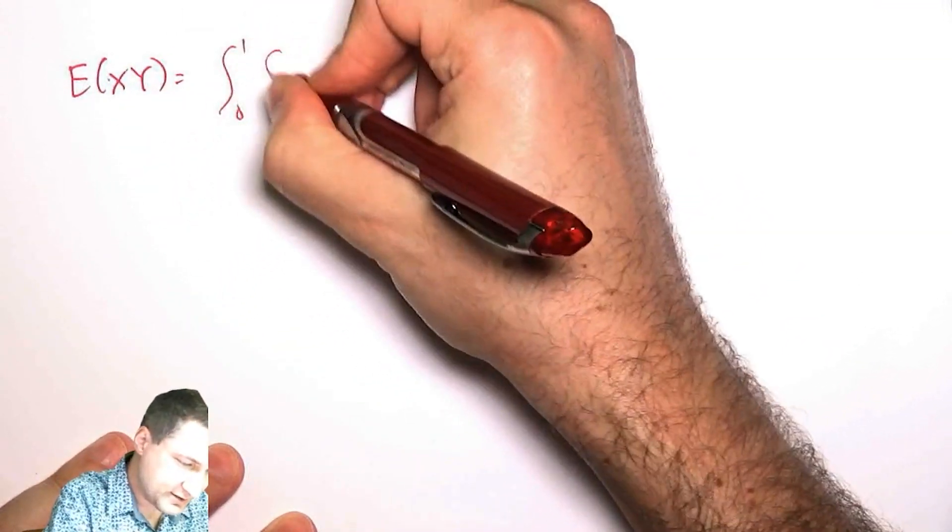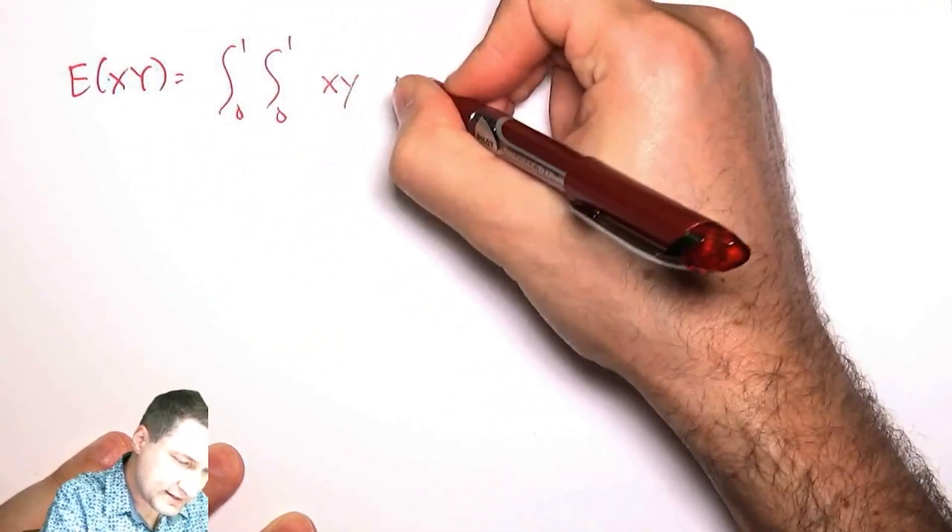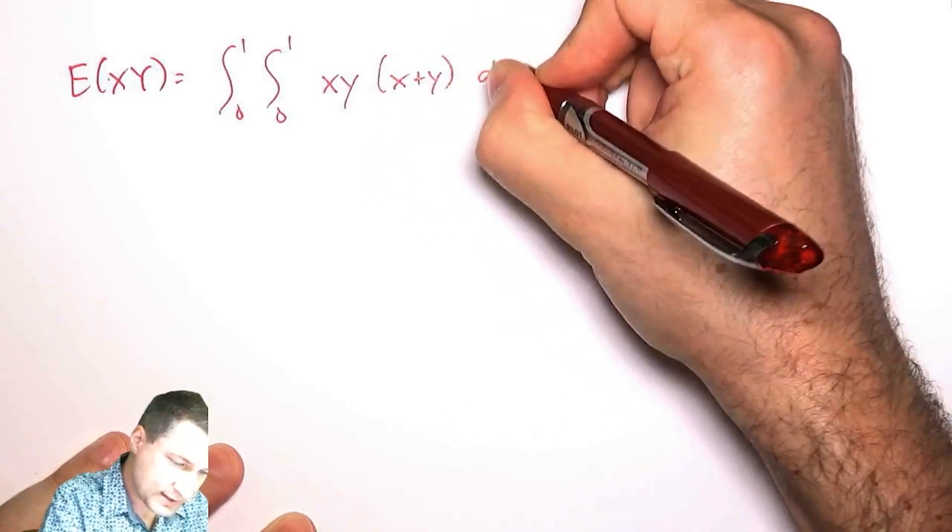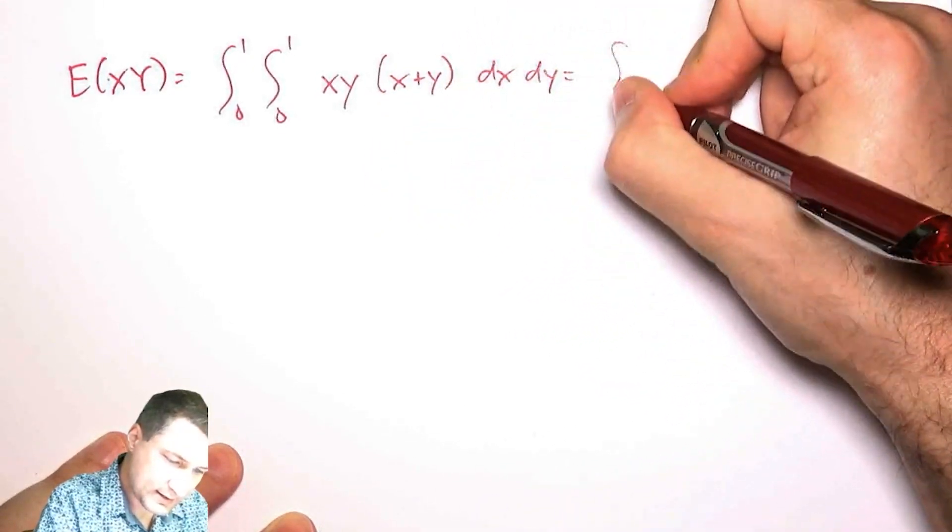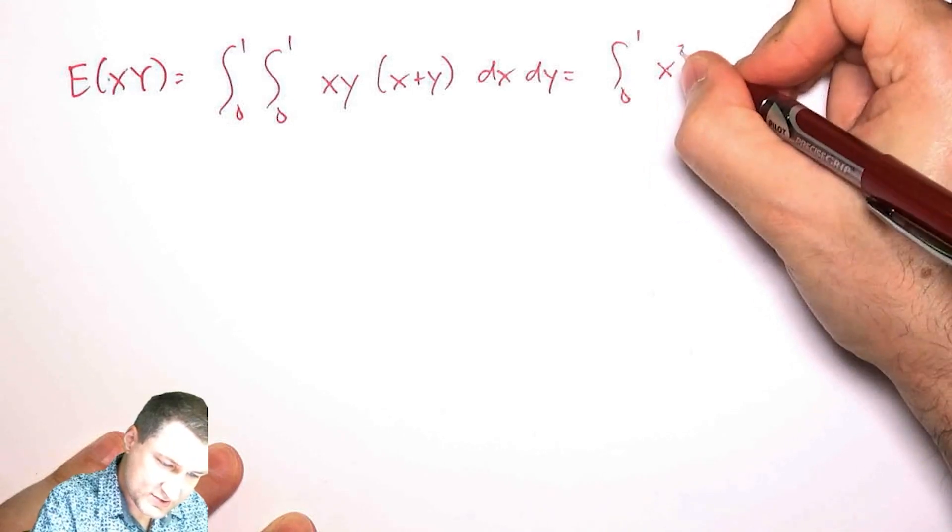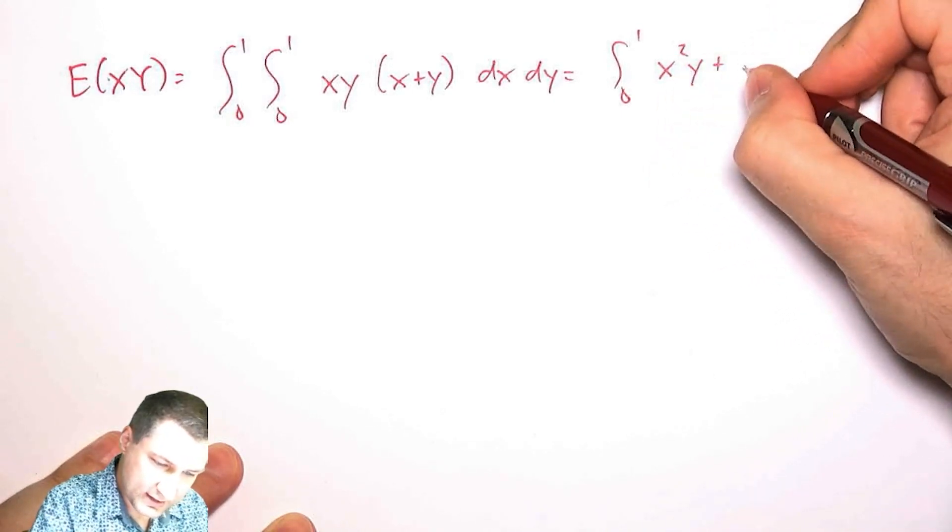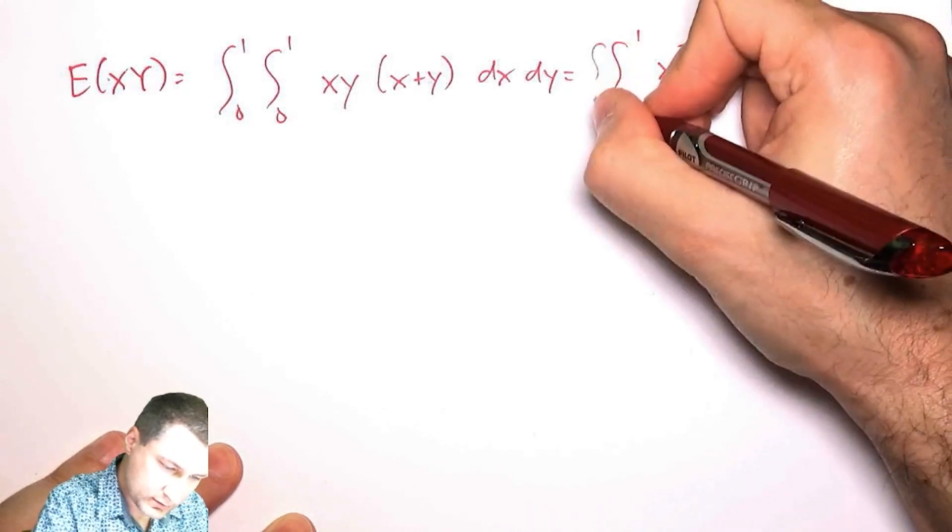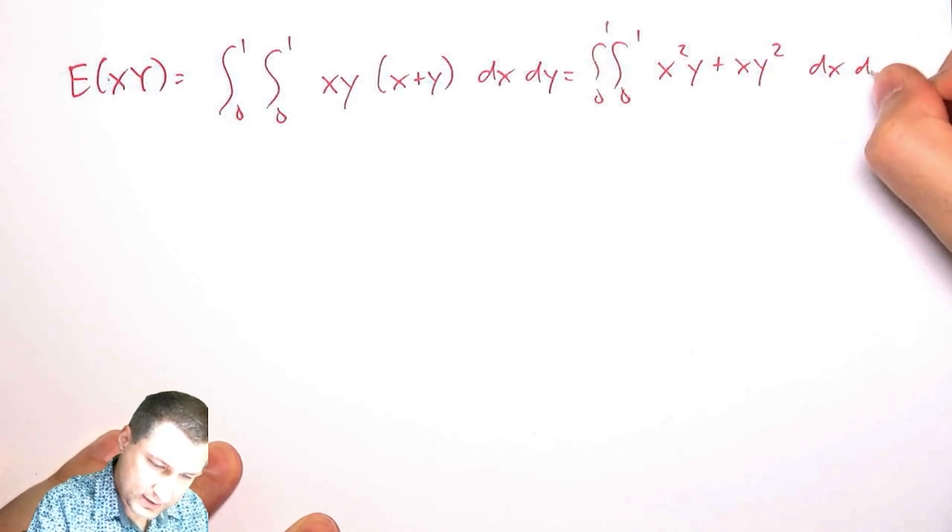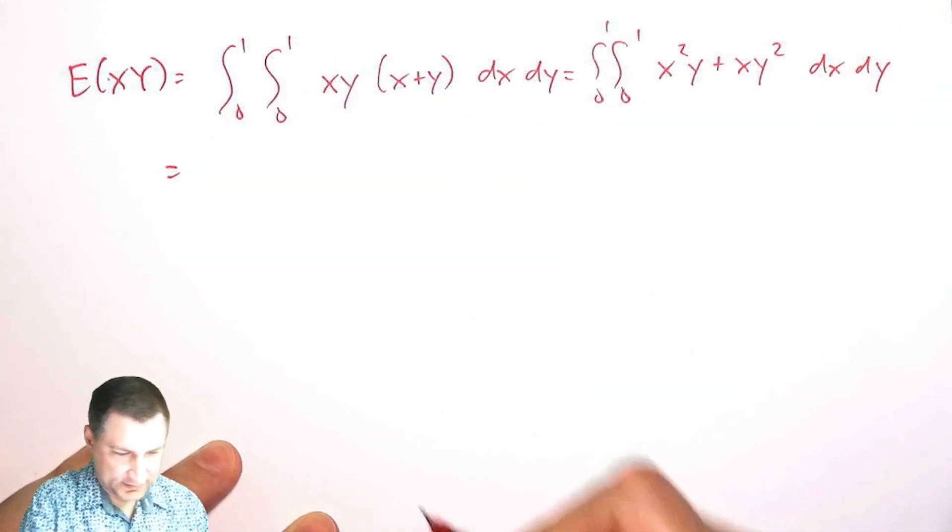And again, this is just integration, nothing for it. So I have X, Y times X plus Y, DX, DY. So I'm going to get an X squared Y plus an X, Y squared DX, DY. It doesn't really matter. Let's do the X one first.